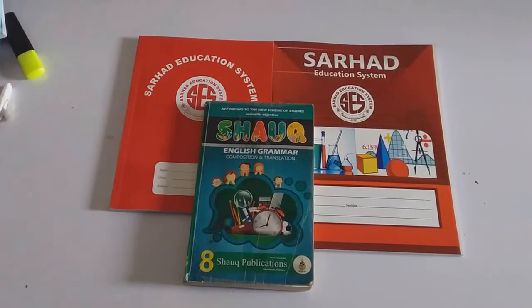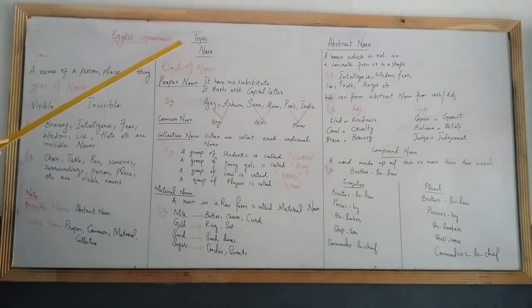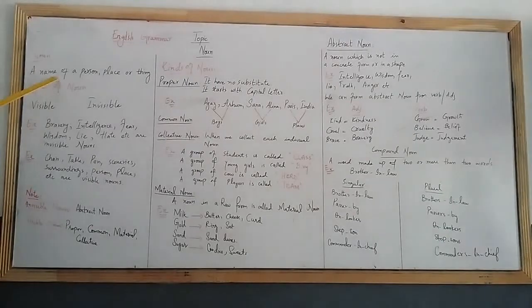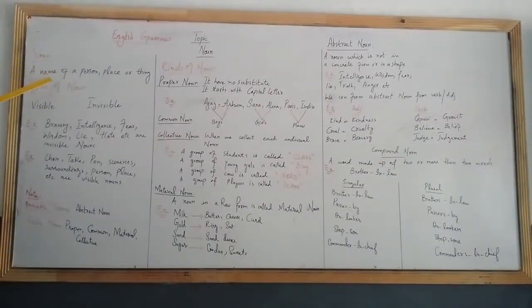This lecture is recorded by Saharad Education School System for Grade 8. Types of Nouns. Nouns can be visible nouns and invisible nouns. Visible nouns are things you can see in your surroundings.